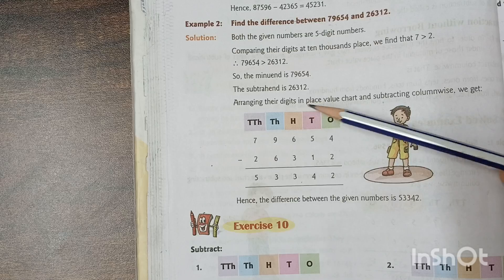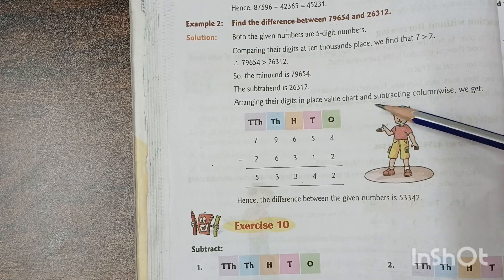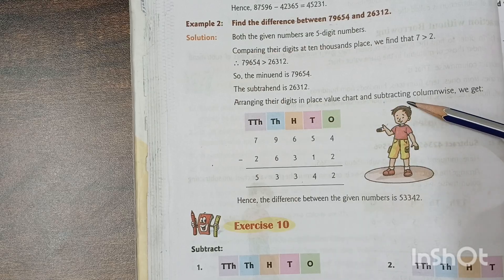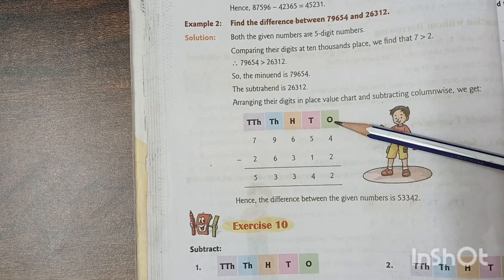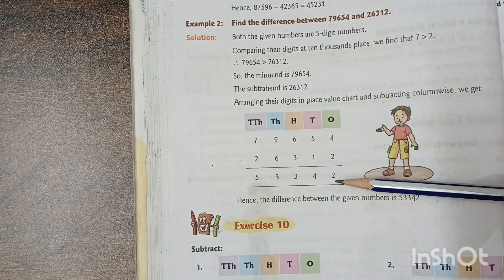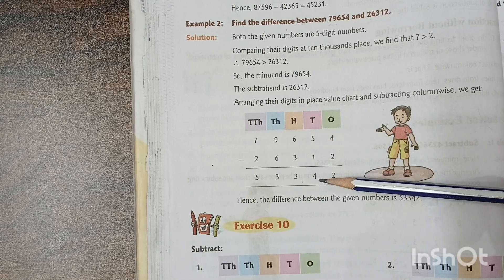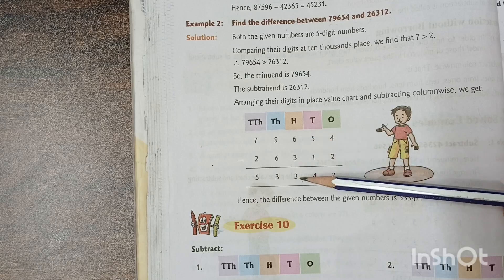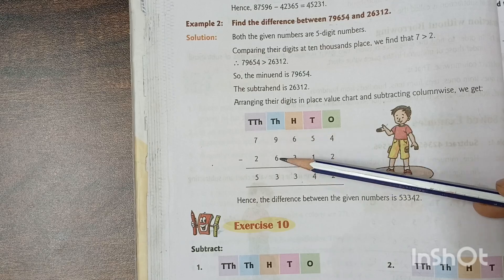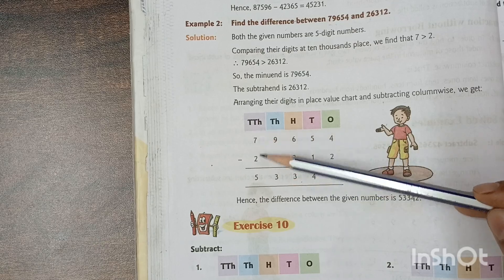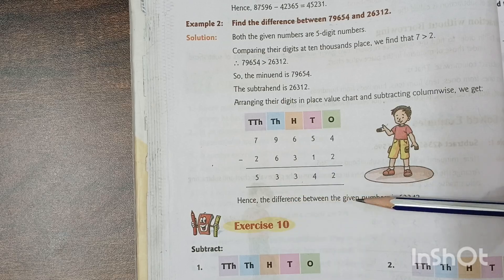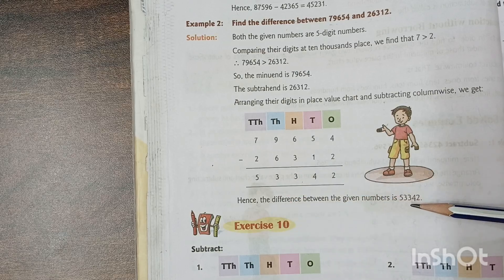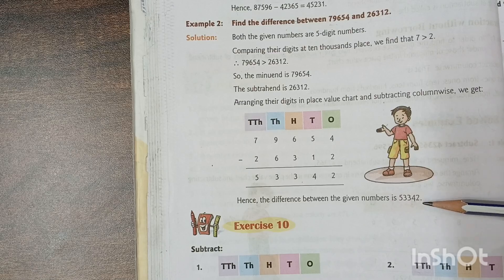Arranging their digits in the place value chart and subtracting column wise, we get: 4 minus 2 is 2, 5 minus 1 is 4, 6 minus 3 is 3, 9 minus 6 is 3, 7 minus 2 is 5. Hence, the difference between the given numbers is 53,342.